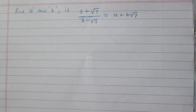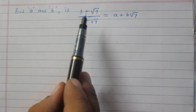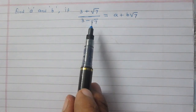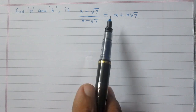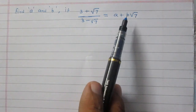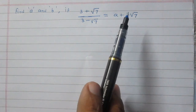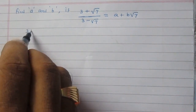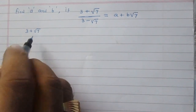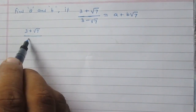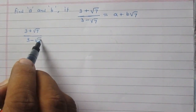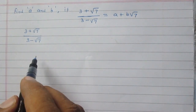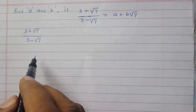Find a and b if (3 + √7) divided by (3 - √7) is equal to a plus b times √7. Consider this fraction with an irrational denominator.